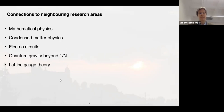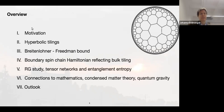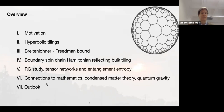Now I'll enter the details. First I'll explain hyperbolic tilings, then the Breitenlohner-Freedman bound — familiar to any holographer — as our first example of hyperbolic tilings realizing AdS content. Then the bulk of the talk is about the boundary spin chain Hamiltonian we constructed, which reflects the bulk tiling. We studied it using RG techniques and tensor networks, and calculated entanglement entropy. Towards the end I'll discuss connections to mathematics, condensed matter theory, quantum gravity, and lattice gauge theory.